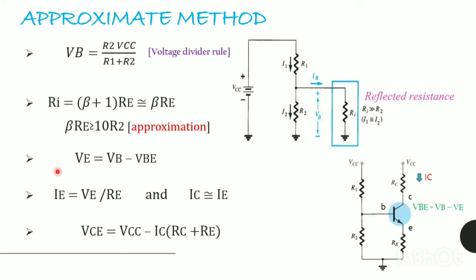VE is calculated as - we know VBE equals VB minus VE. From here, VE is calculated. By using Ohm's law, IE is calculated as VE by RE. Our IC is approximately equal to IE. The collector-emitter voltage VCE is calculated as VCC minus IC RC minus IE RE. Since IE is approximately equal to IC, we obtain VCC minus IC into RC plus RE.